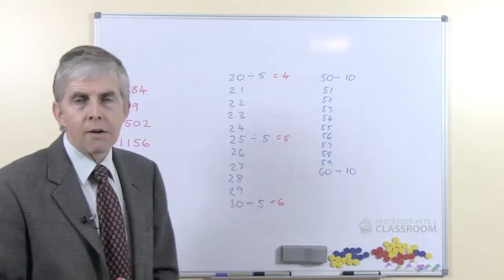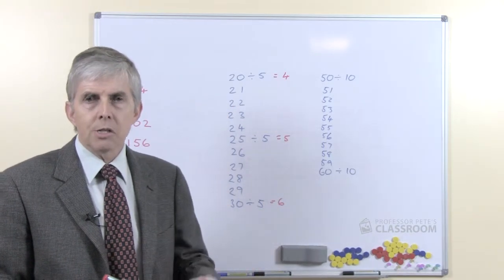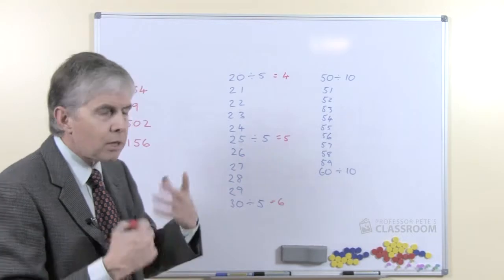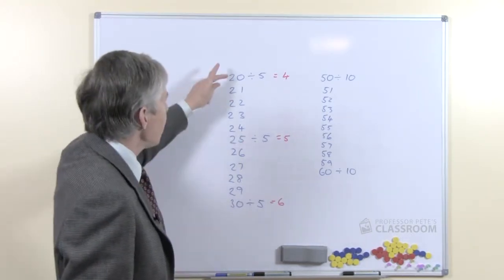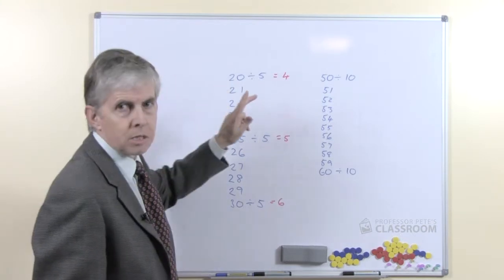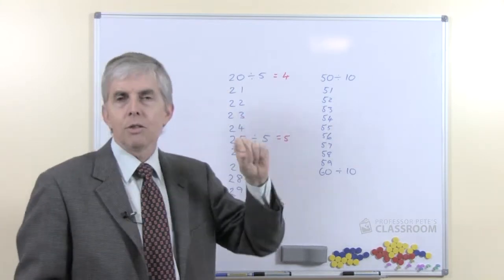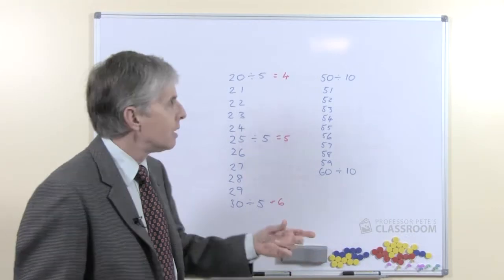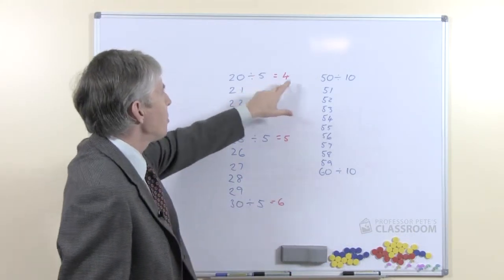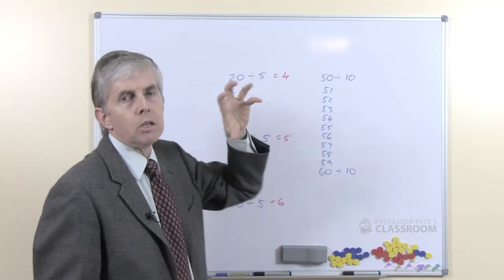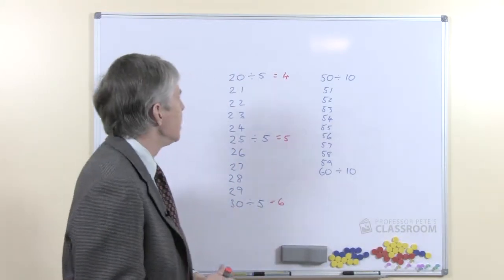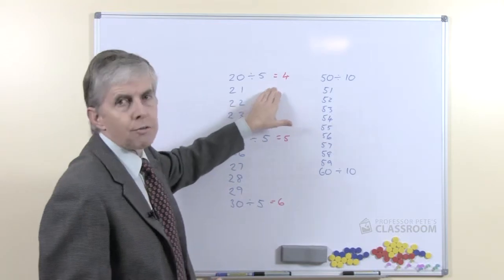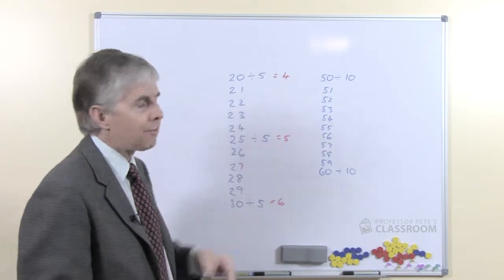But between them we have other numbers, and so our students need to realize, and of course we'll help them understand this using materials, that if we have a number between the whole number multiples, we can still divide it by 5 but we'll just have some left over. So dividing 21 by 5 means we're going to have 4 collections, depending on the model that we're using for division, 4 lots of 5 and 1 left over.